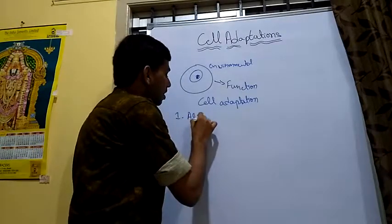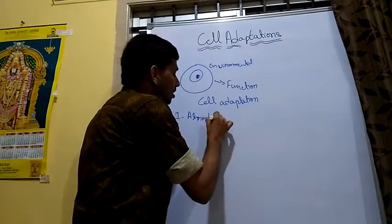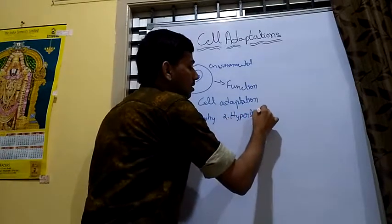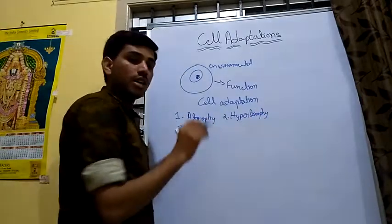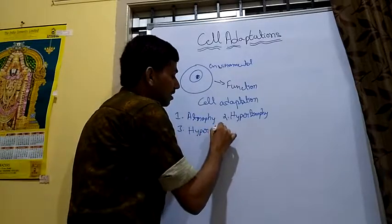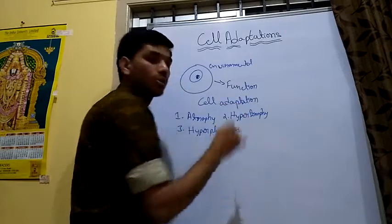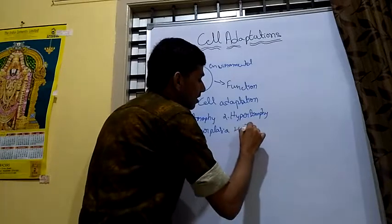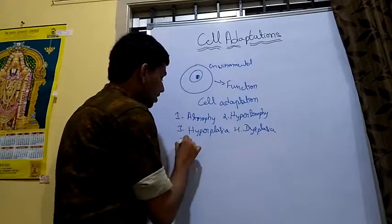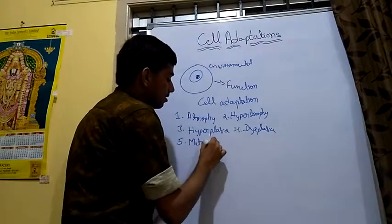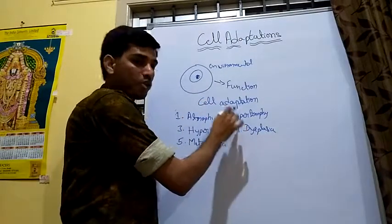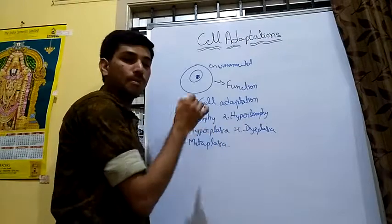The five types of cell adaptations are: first, atrophy; second, hypertrophy; third, hyperplasia; fourth, dysplasia; and fifth, metaplasia.